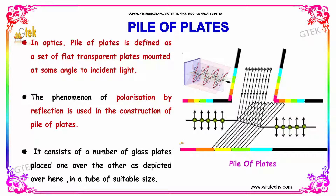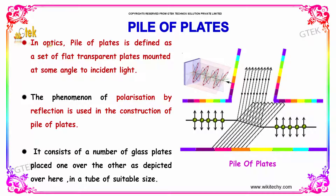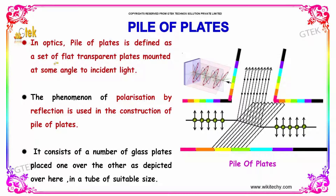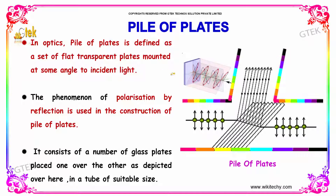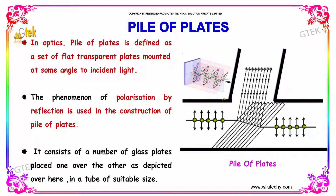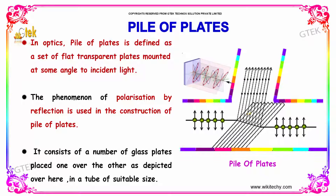Let's talk about the pile of plates. In optics, pile of plates is defined as a set of flat, transparent plates mounted at some angle to incident light. This is the pile of plates.